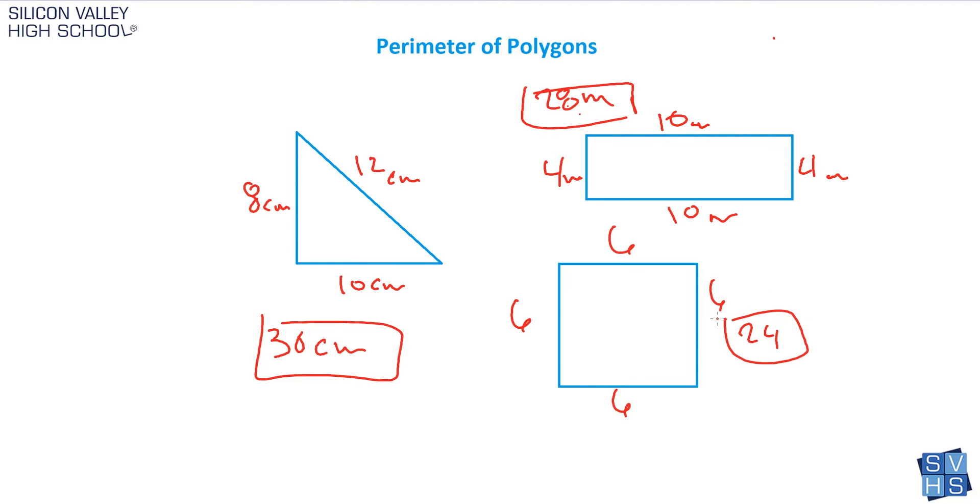That's it. Perimeter is very easy. The only way they can try to make it difficult is by not giving you sides and making you think. In this case it was a rectangle, so they gave me two and I figured the others. In this case it was a square—I knew all the sides are the same. This one they just gave them to me.